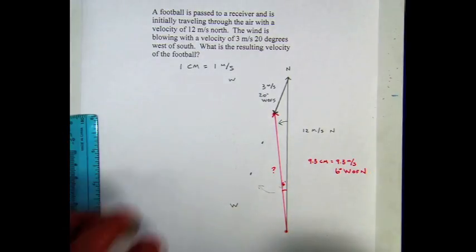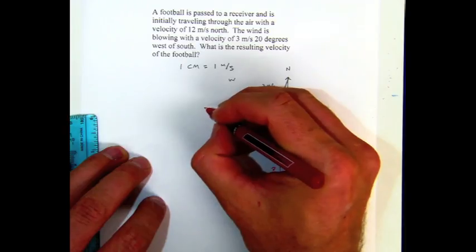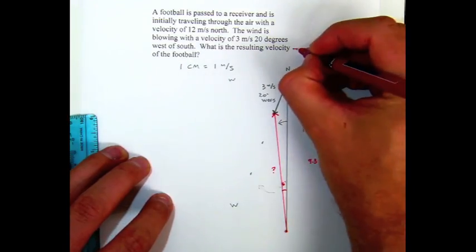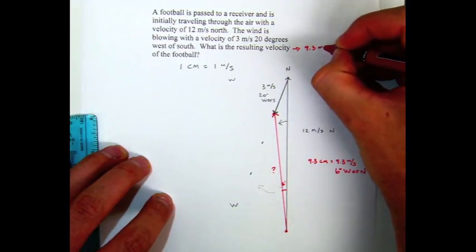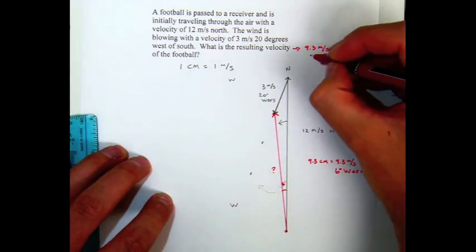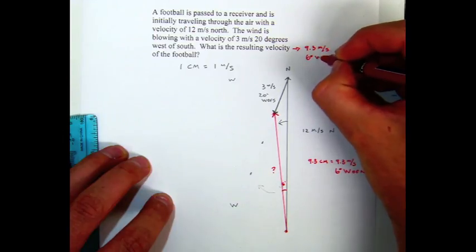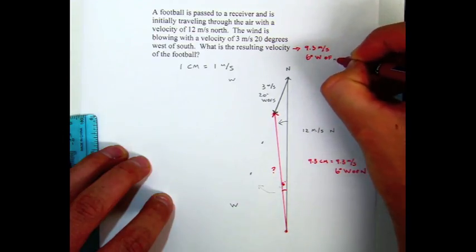Alright, and so our resultant velocity, when we add these two vectors together, our resultant velocity is 9.3 meters per second at an angle of 6 degrees west of north.